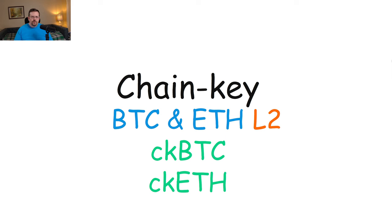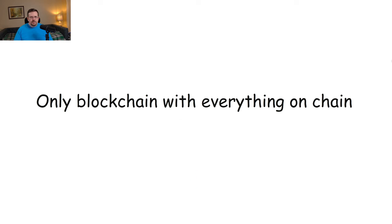Internet Computer is also the only blockchain that offers both BTC and ETH layer 2s, known as CKBTC and CKETH respectively, which is ChainKey Bitcoin and ChainKey ETH. Internet Computer is one of the only, if not the only, blockchains that offers everything on-chain.